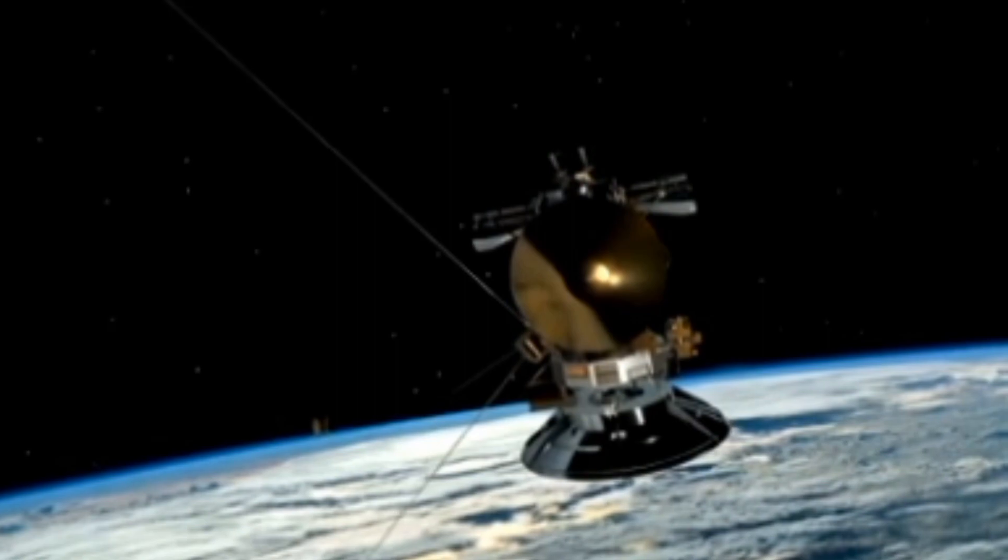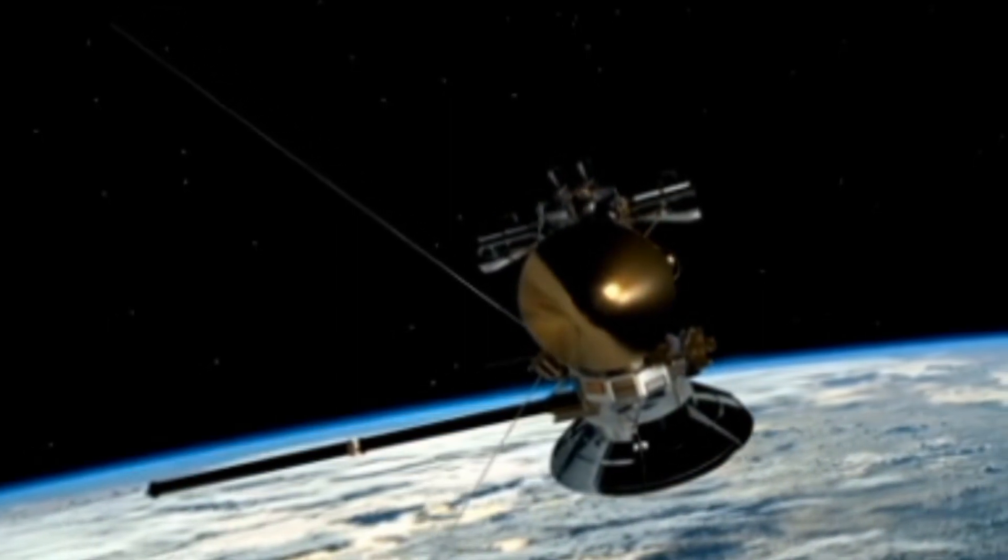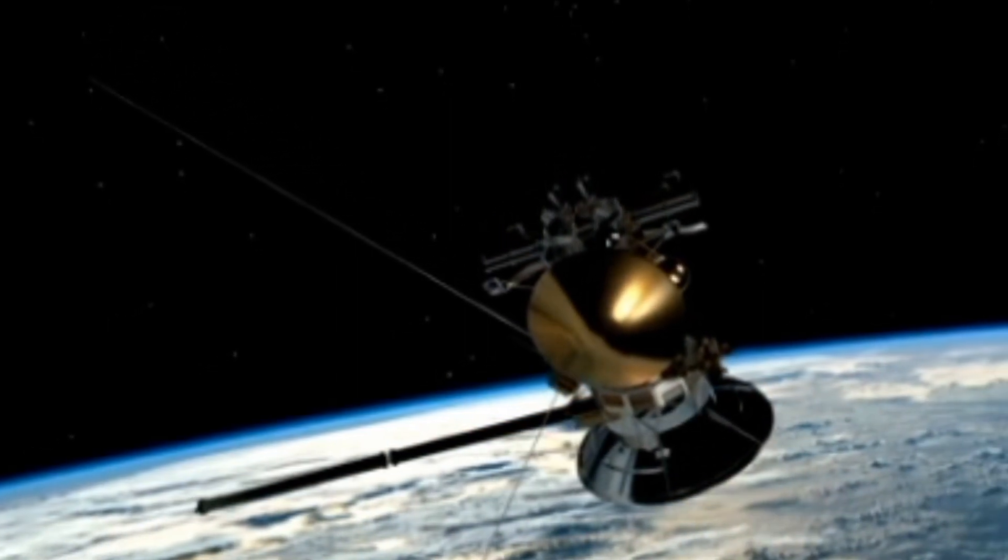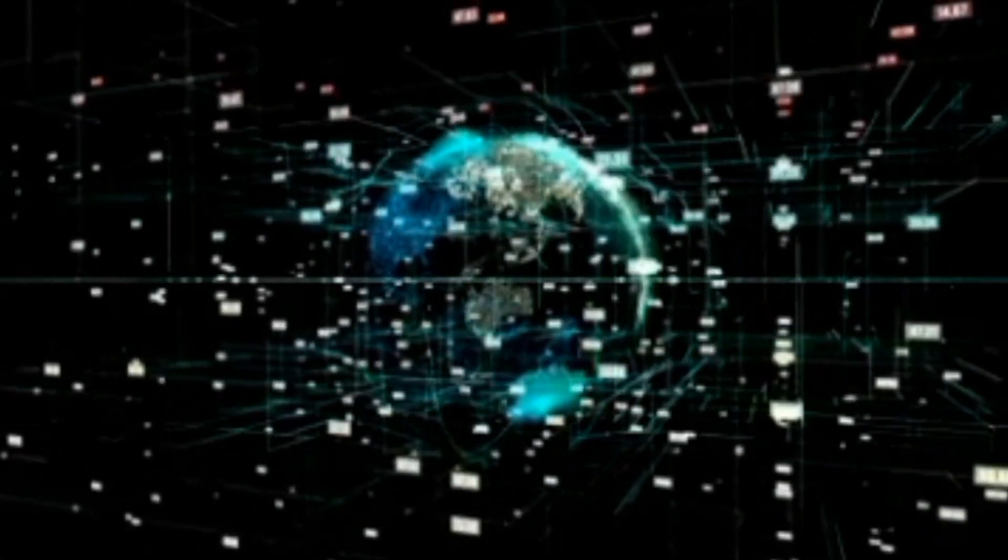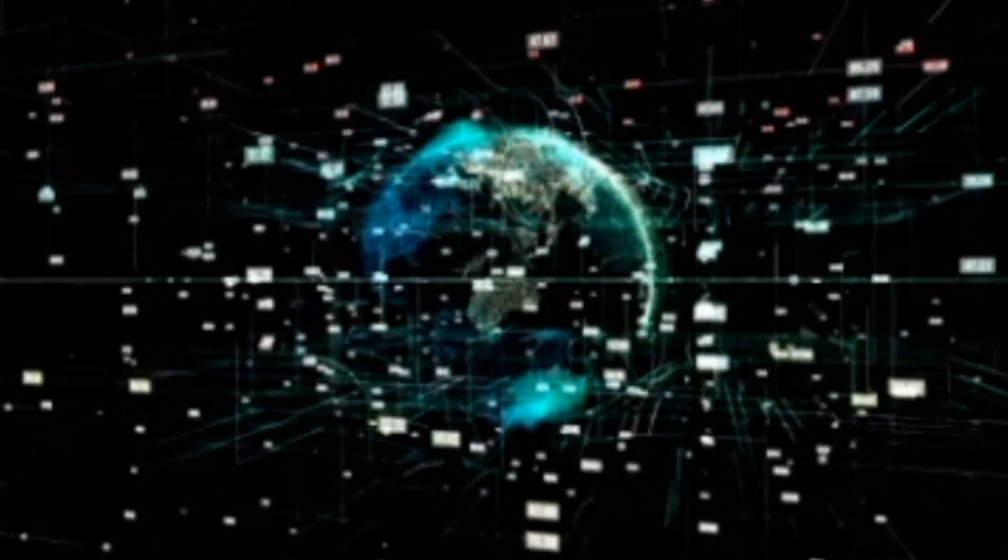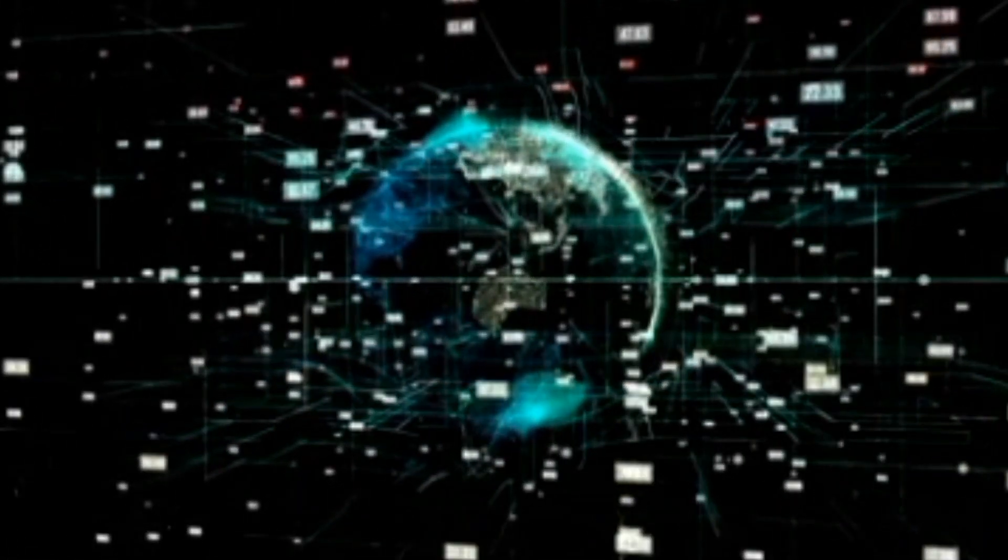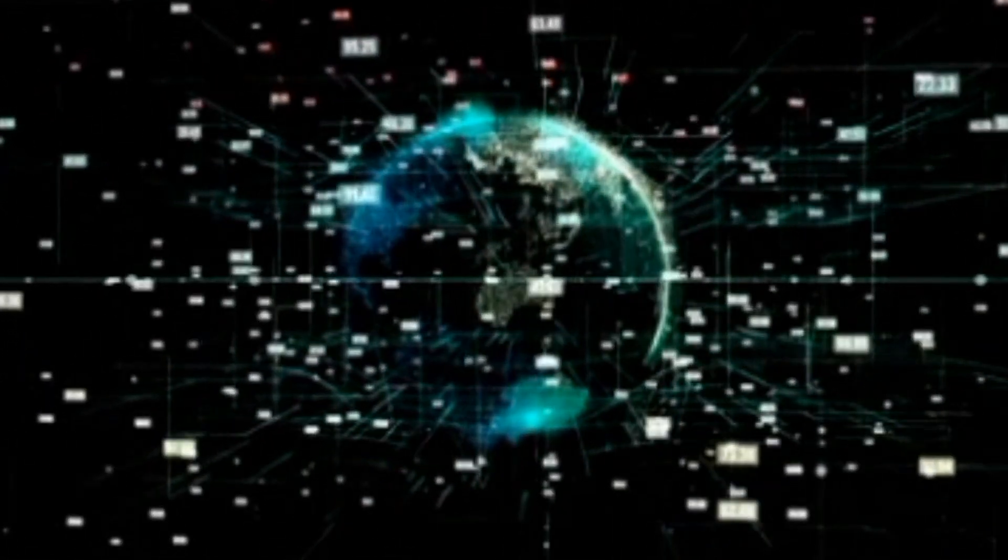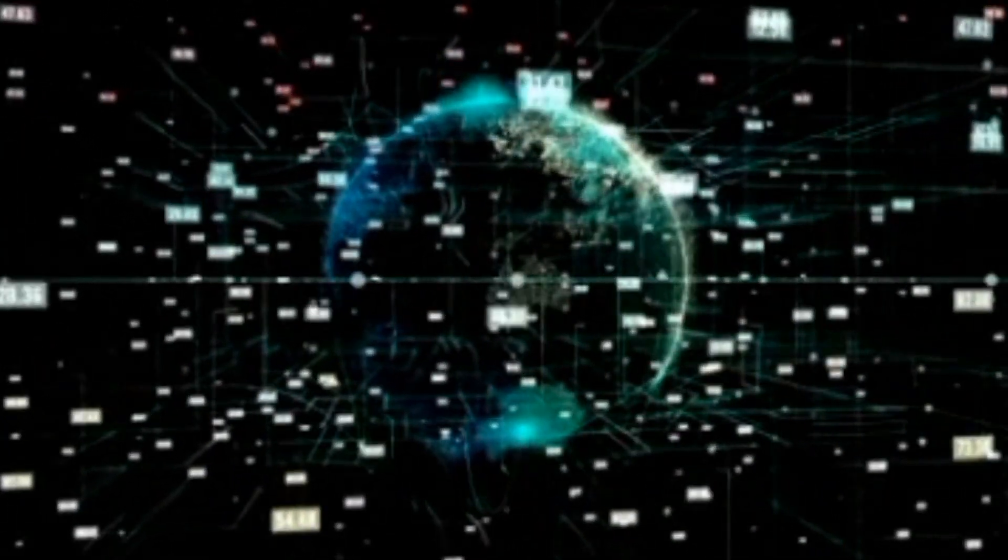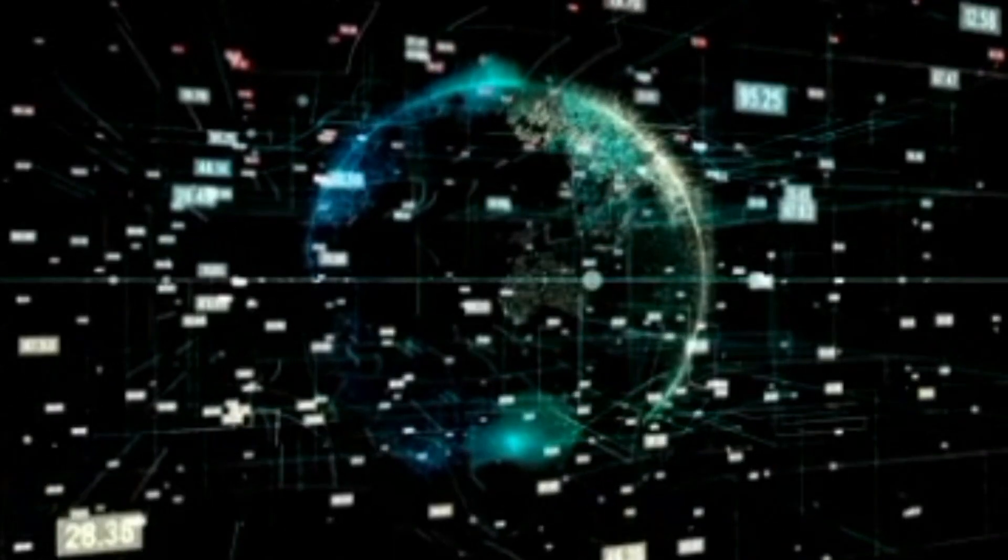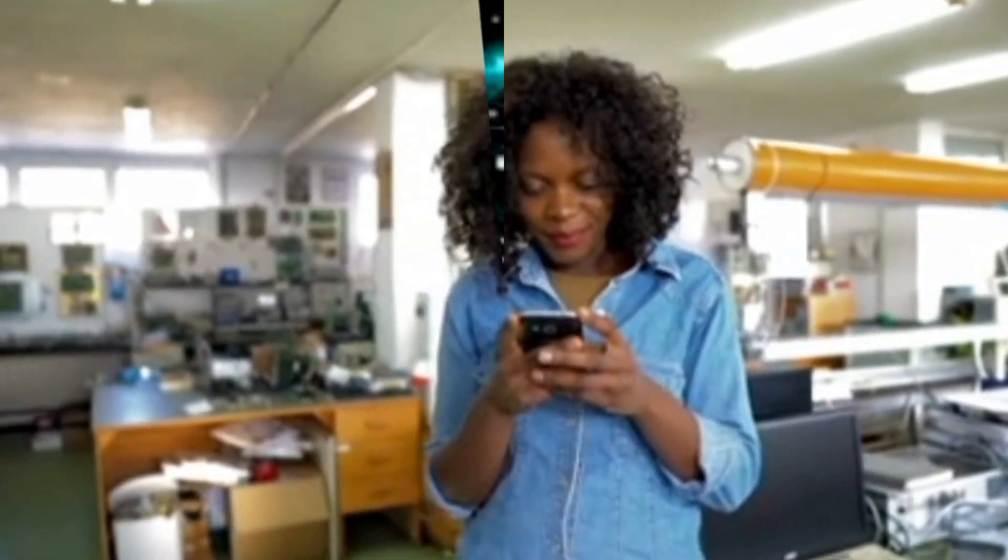Each satellite transmits a unique signal and orbital parameters that allow GPS devices to decode and compute the precise location of the satellite. The GPS receiver uses this information and trilateration to calculate your exact location.